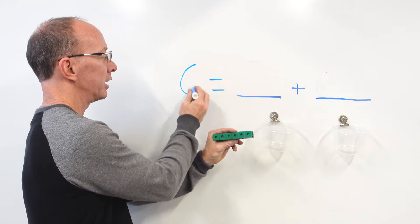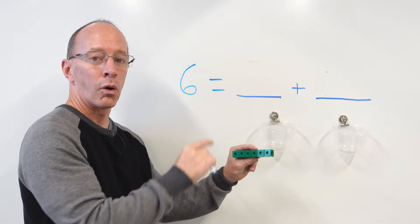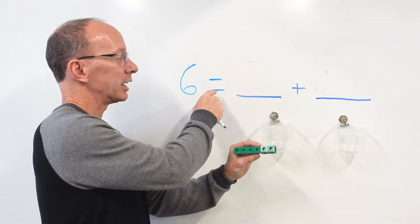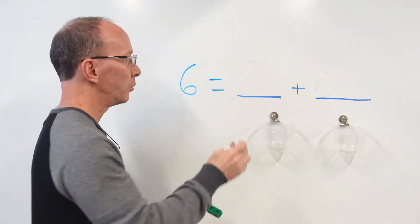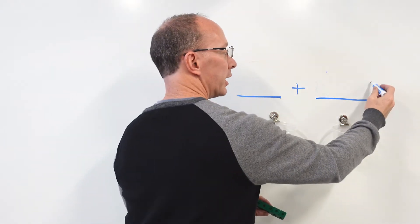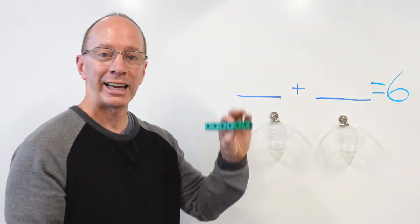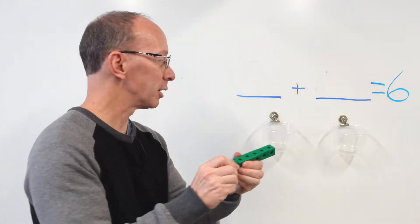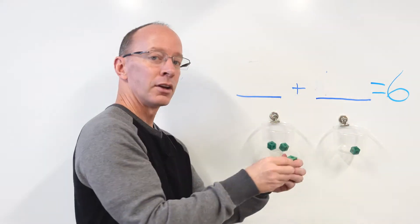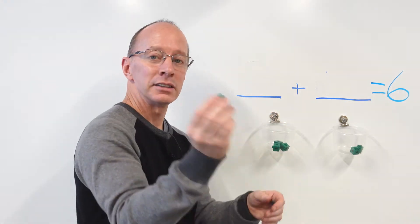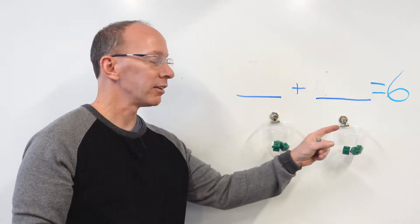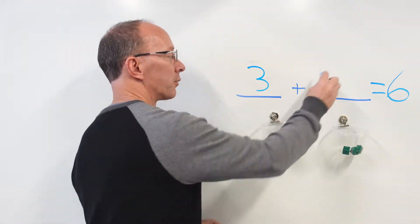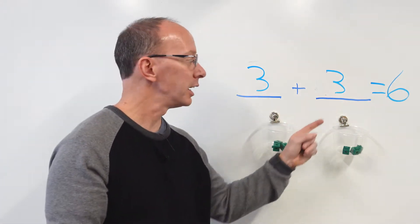And I can put six right here. So six equals some number here and then another number there. Or I can put the six on the other side — it doesn't matter when you are making an equation if you have the equal sign on this side or on that side. So if you're used to having it on the other side, we can just change it. So let's go ahead and divide this into two equal groups. I'm going to put the cubes in and say the number as I count them: one, two, three, four, five, six. I have three cubes in here and three cubes in here. So I'm going to write the number three up here and three right here. So three plus three equals six — two equal groups of three.